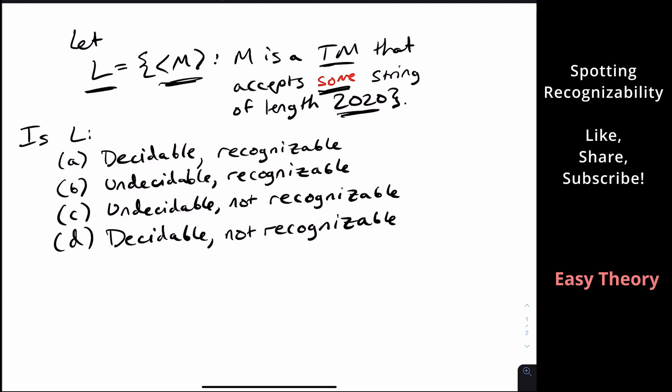So I have adapted the question from what it actually was that was sent to me. So the numbers were different here, but it will work in that scenario also. So the question asked, is L decidable and recognizable, undecidable and recognizable, undecidable but not recognizable, or decidable and not recognizable.